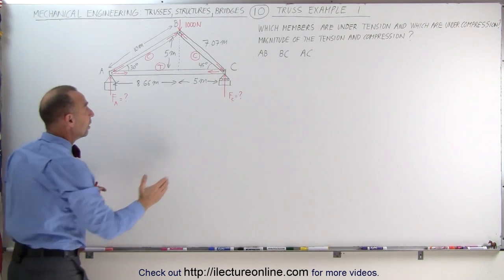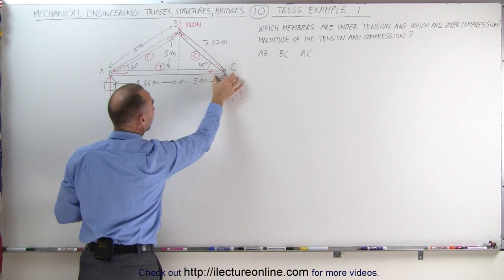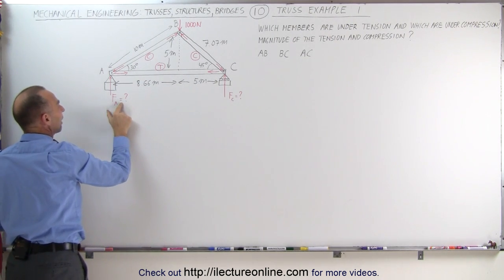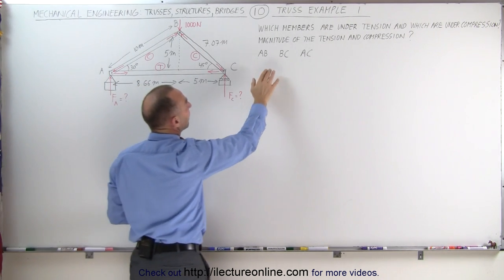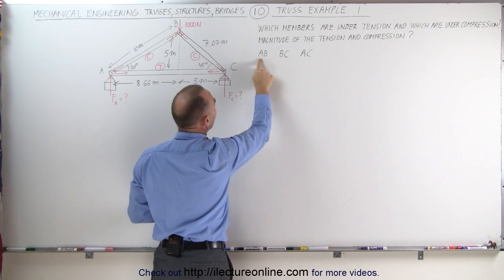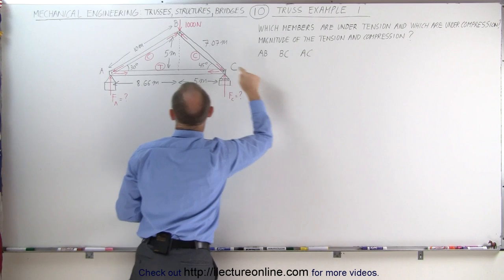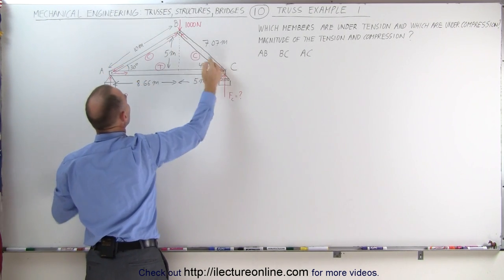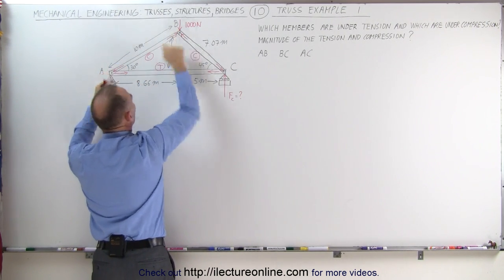What we're trying to find here is the force on the support at C, F sub C, and the force at A, F sub A. We're also trying to find the tension and compression on members AB, BC, and AC. The corners are marked A, B, and C, so member AB would be the member connecting those two joints.